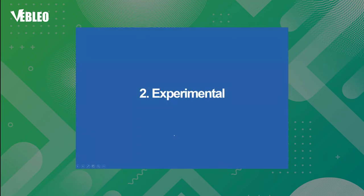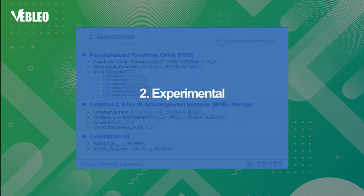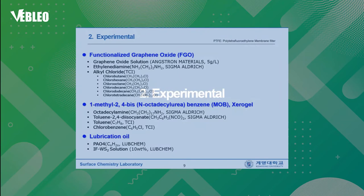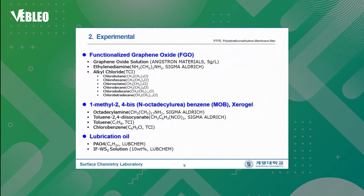This is the experimental part. In order to synthesize functionalized graphene oxide, we used graphene oxide solution, ethylene diamine, and six kinds of alkyl chlorides. We also used octadecylamine, toluene-2,4-diisocyanate, toluene, and chlorobenzene. We also employed PAO4 base oil and IFWS2 solution.